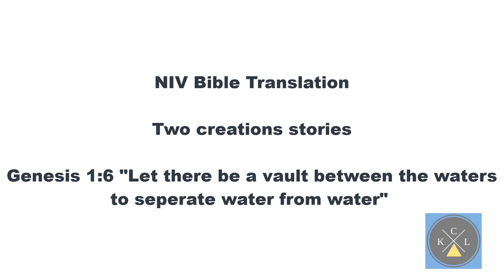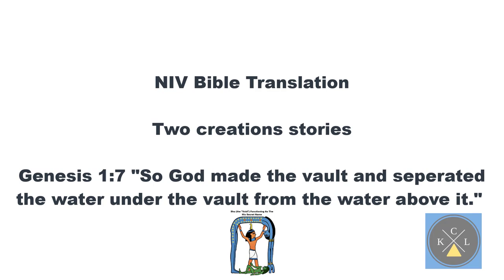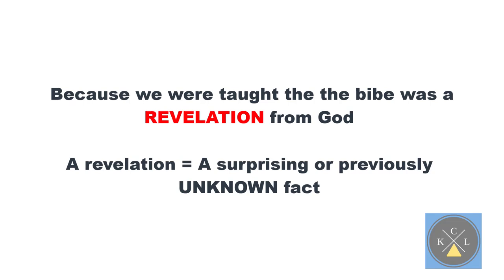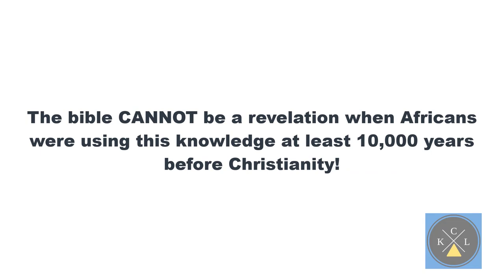This video is meant to introduce you to the ancient African science and help you decode where Christianity got its biblical information. Why is it important to know that the Bible is stolen knowledge? Because Christianity taught all of us that the Bible and all that it teaches was a revelation from God. A revelation is defined as a surprising or previously unknown fact. Well, if this knowledge was in ancient Egypt and all over Africa thousands of years ago, then the Bible cannot qualify as a revelation.